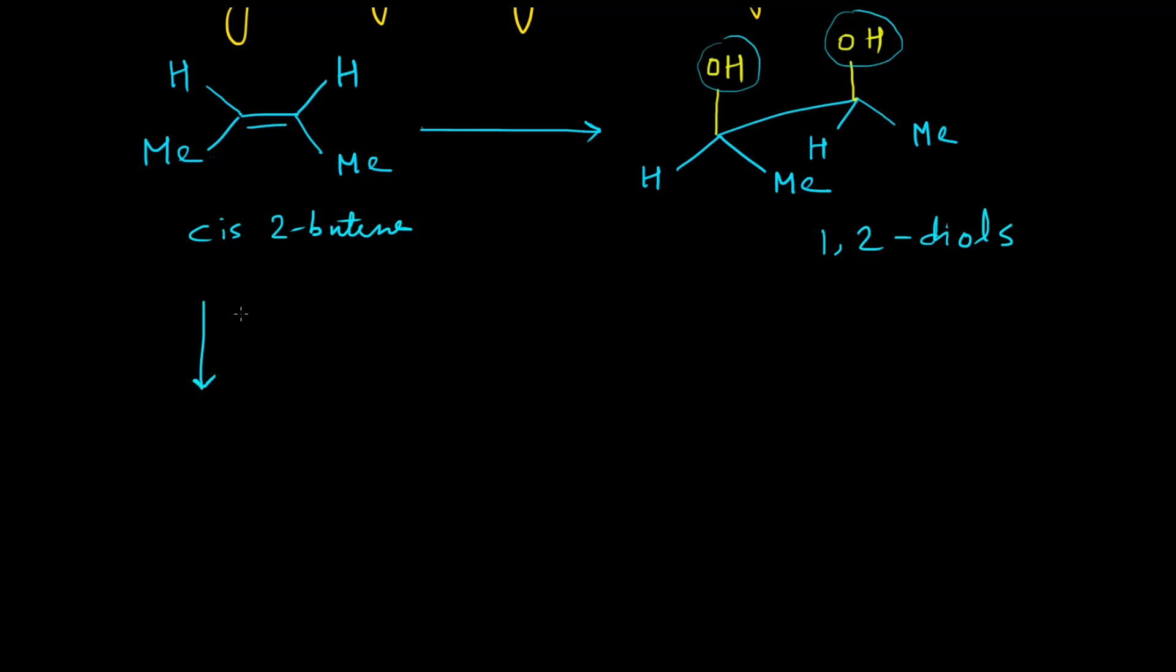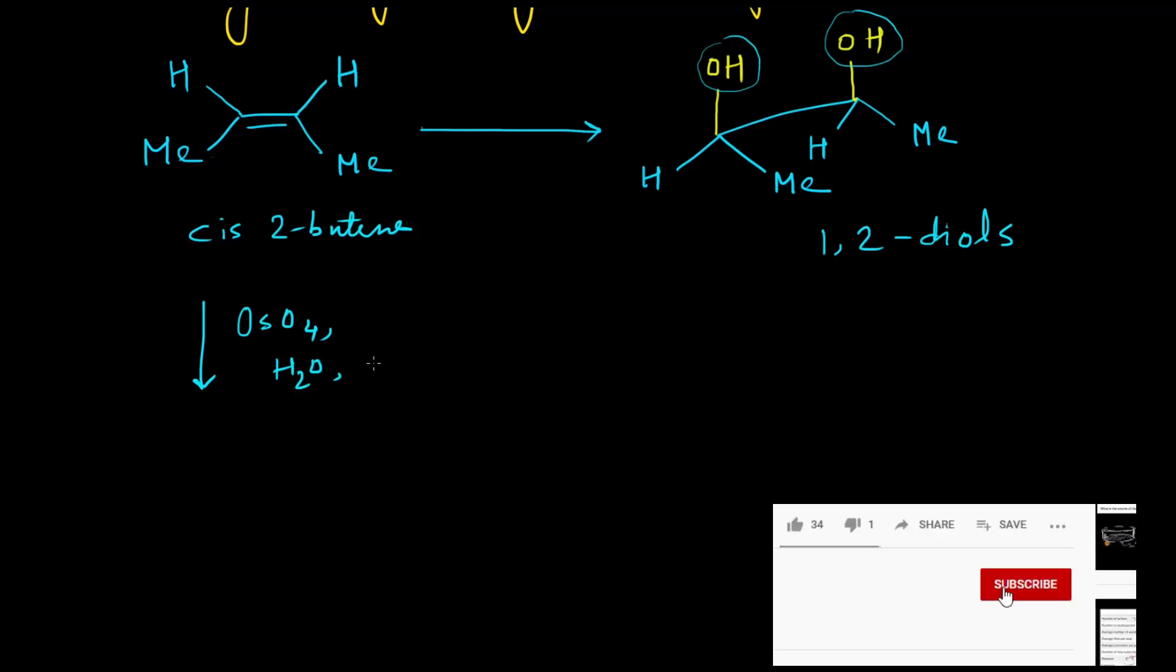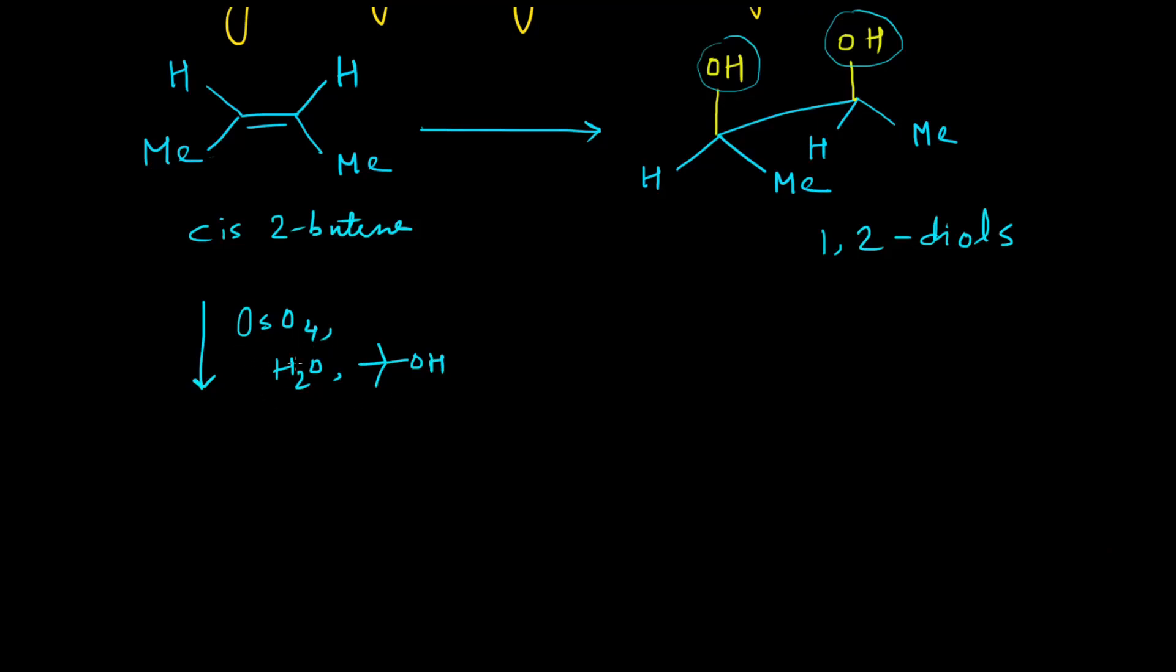First is the osmium tetroxide in aqueous alcoholic solutions. The alcohols which are used are generally tertiary butanol, which does not have any alpha hydrogen, because if there is any alpha hydrogen, the alcohol will be oxidized by this osmium tetroxide.